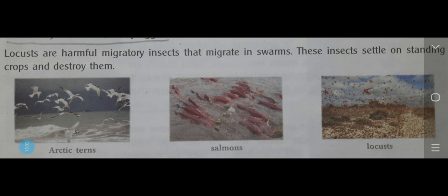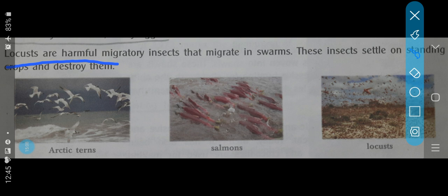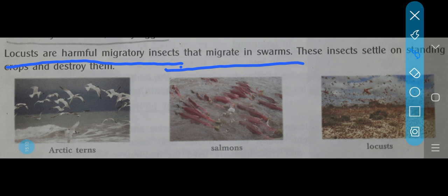Another animal — locusts. Locusts are harmful migratory insects that migrate in swarms. You may have heard about them destroying crops, especially near Punjab, Haryana, and Delhi. They are called 'tidde' in Hindi. Swarms of locusts fly and migrate, and wherever they go to fields, they destroy the crops. These insects settle on standing crops and destroy them completely.